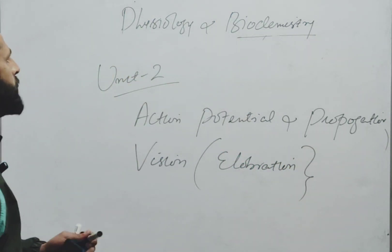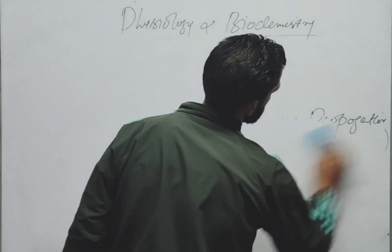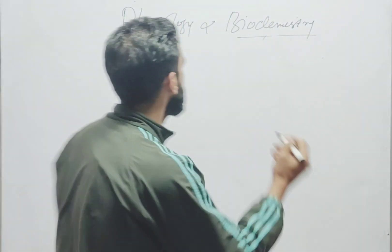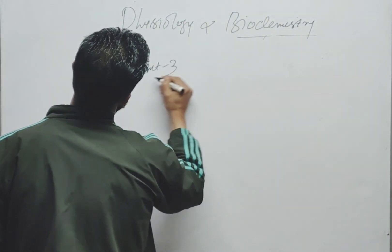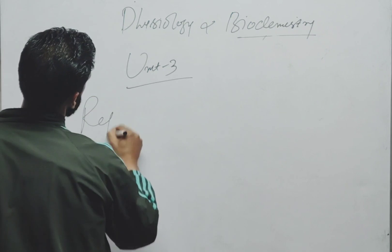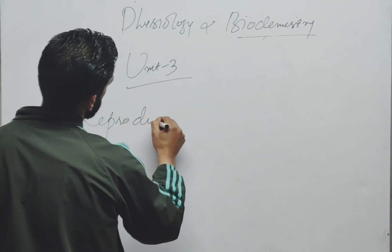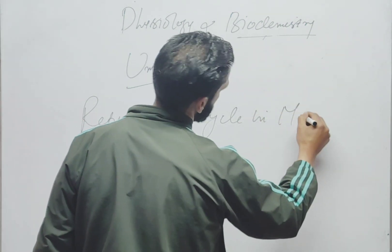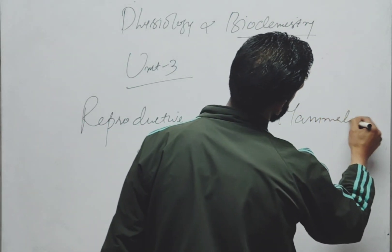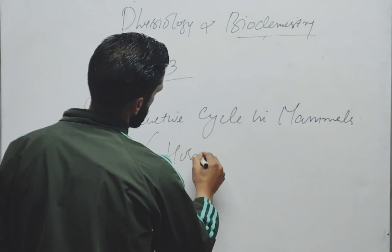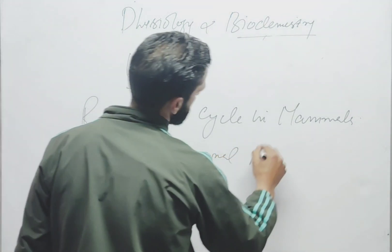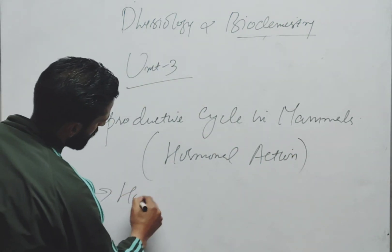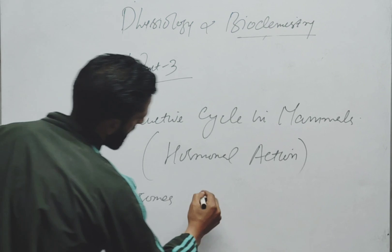Unit 2 is complete. Coming to Unit 3. In Unit 3, the important question is the reproductive cycle in mammals. For the reproductive cycle in mammals, you especially need to show hormonal action — focus on hormonal action in detail.